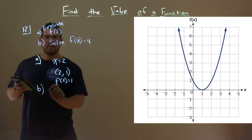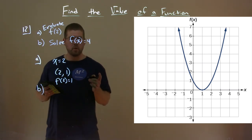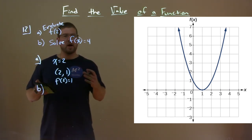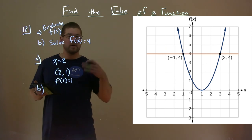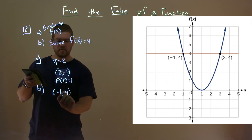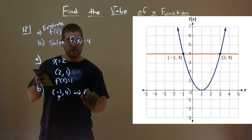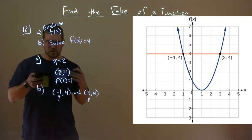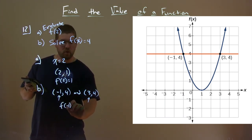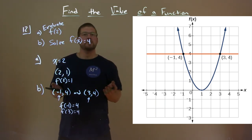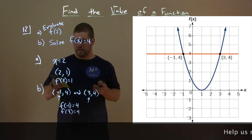What about part b? They ask us to solve for when f(x) equals 4. f(x) equals 4 is like a horizontal line, like y equals 4. If we graph that line, we can see what x values cause that. Here we have two x values: we see negative 1 comma 4, so x equals negative 1, and this happens at 3 comma 4. We have two solutions: f(negative 1) equals 4 and f(3) equals 4. There are two x values that give us an output of 4, which is fine and still allows this to be a function.